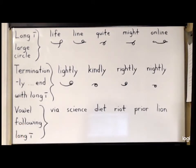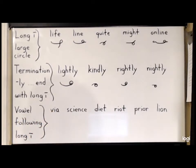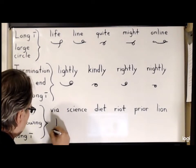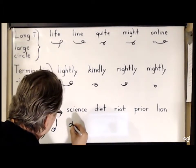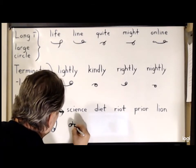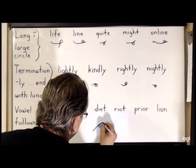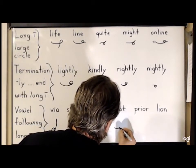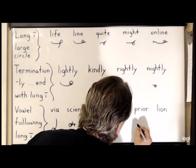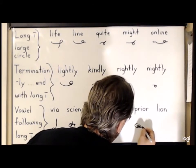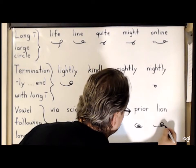And for vowels that follow a long I, the same double circle rule applies. So for 'via', just the V, large circle, and small circle inside. For 'science', S, large circle, small circle, N-S. For 'diet', D, large circle, small circle, T. For 'riot', R, large circle, small circle, T. For 'prior', P-R, large circle, small circle, R. And finally, 'lion' will be L, large circle, small circle, N.